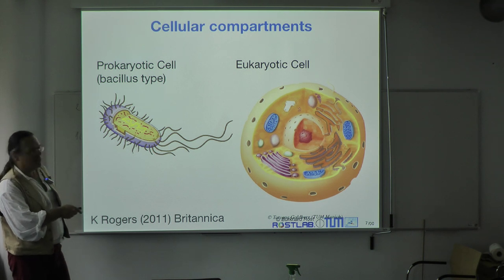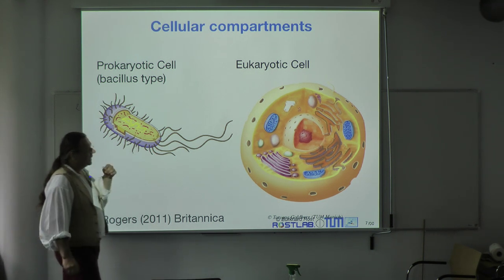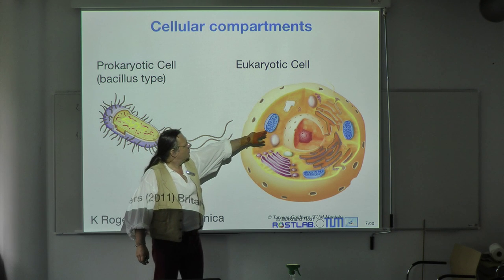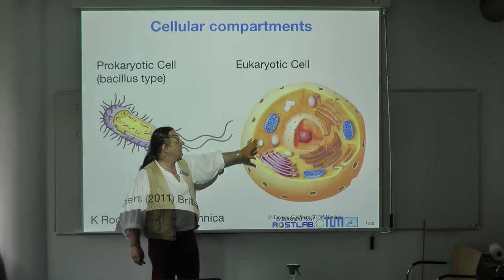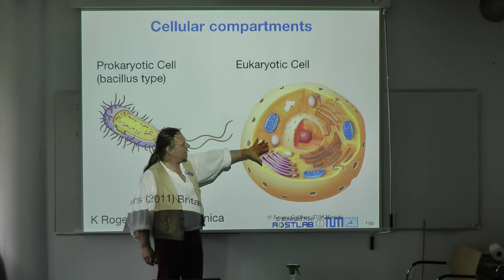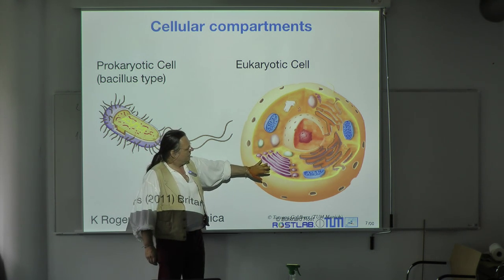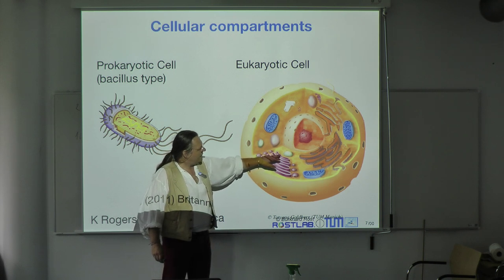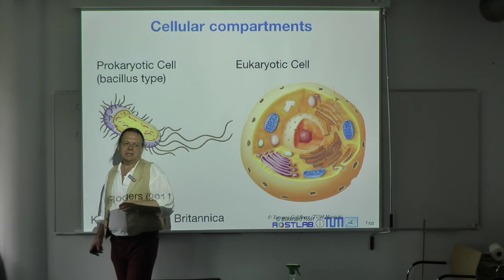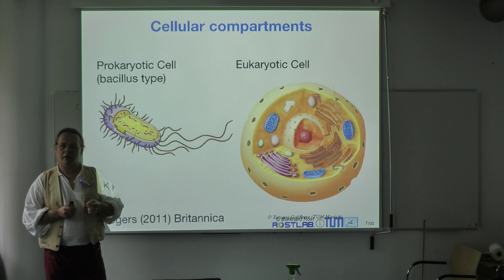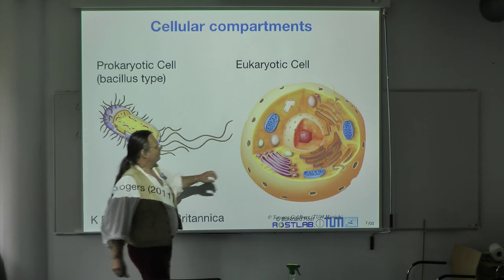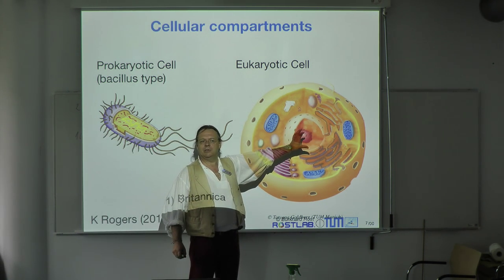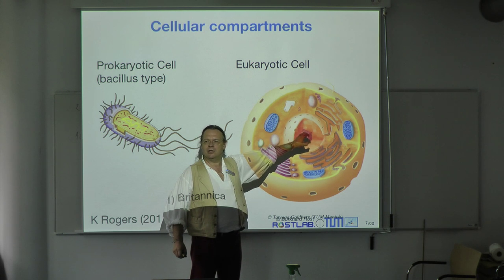Another point about eukaryotic cells: there is substructure, and actually many of these substructures — those here happen to be the mitochondria. This will not be part of the exam; it's part of a different lecture. But the idea of eukaryote versus prokaryote is not wrong to take home. You have sub-compartments inside a eukaryote.